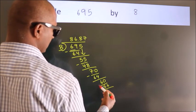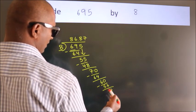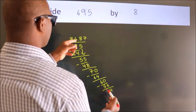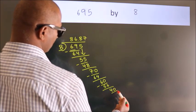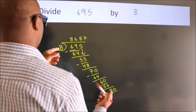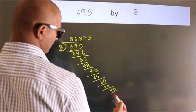Now we subtract. We get 4. After this, we already have the decimal, so directly take 0, so 40. When do we get 40 in the 8 table? 8 times 5 equals 40.